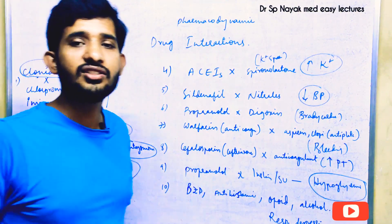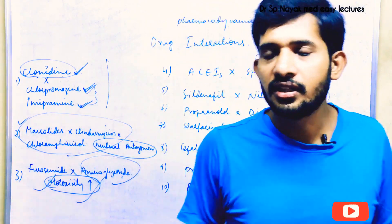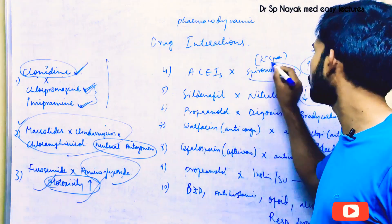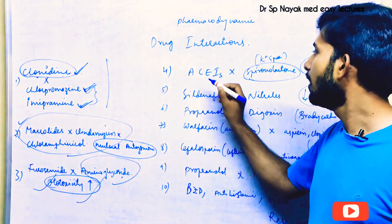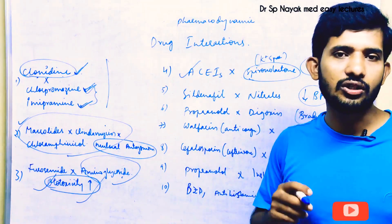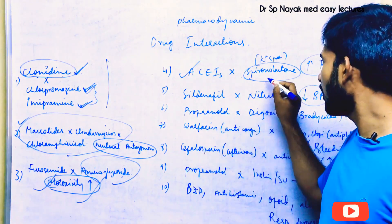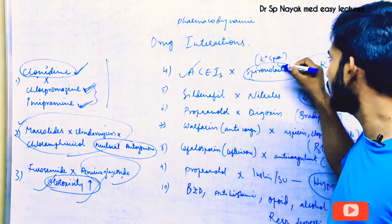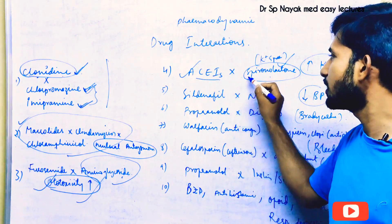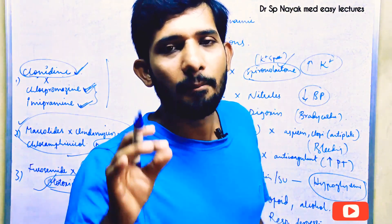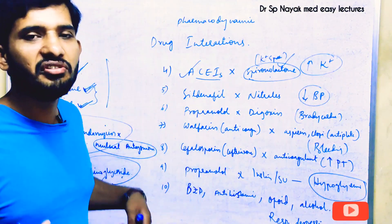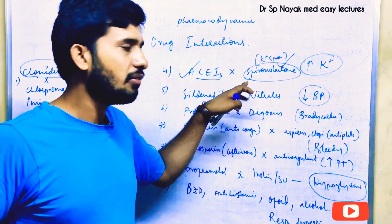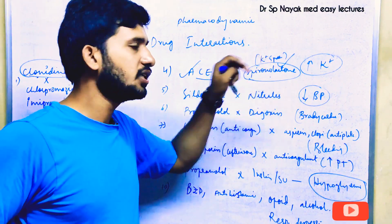The next interaction involves ACE inhibitors and potassium-sparing diuretics, with spironolactone being the common example. ACE inhibitors cause hyperkalemia, and spironolactone also causes hyperkalemia by sparing potassium. When these two drugs are given in combination, the patient will face severe hyperkalemia, which is a very lethal condition. Never combine ACE inhibitors with spironolactone.